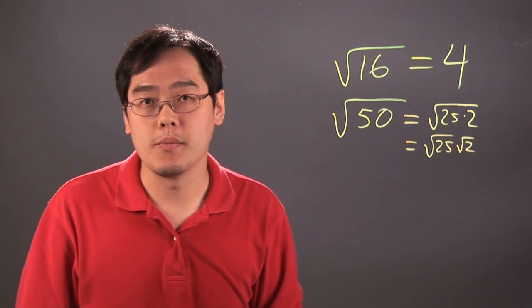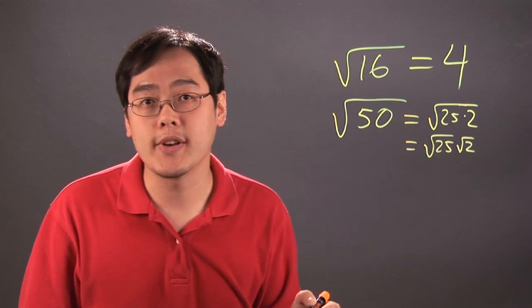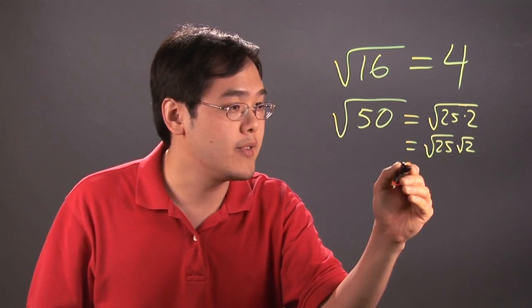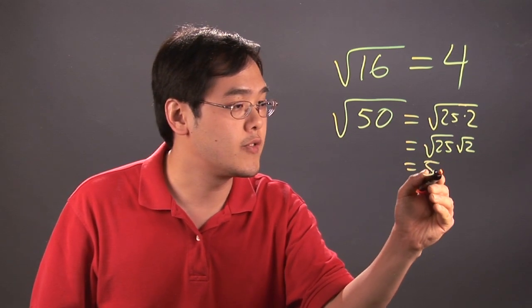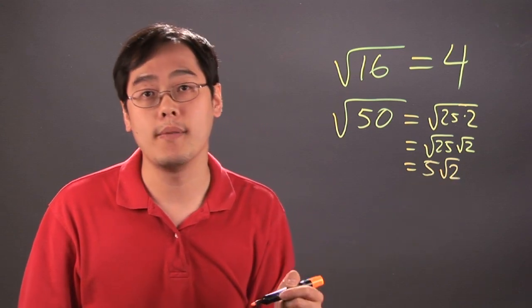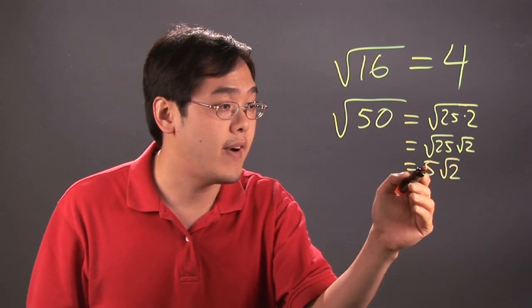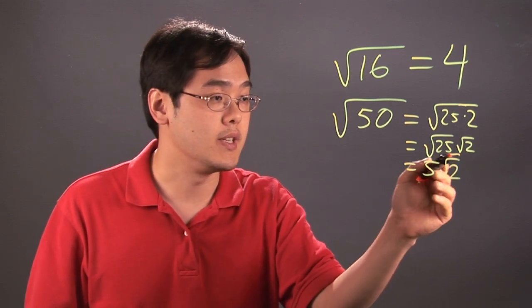Why is 25 so important? Well, 25 is actually a perfect square. So, square root of 25 is actually 5, and square root of 2, because 2 is not a perfect square and 2 is about as good as it gets, 5 square root of 2 is the square root of 50.